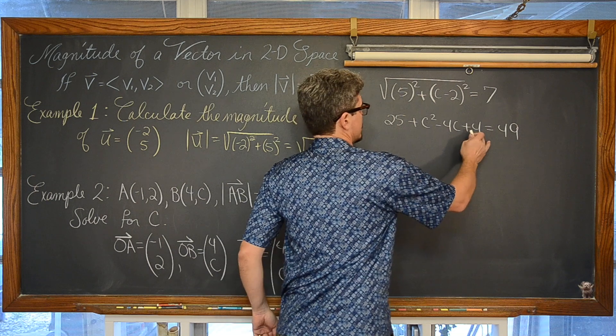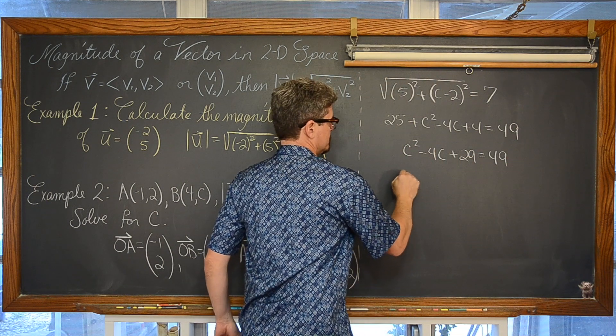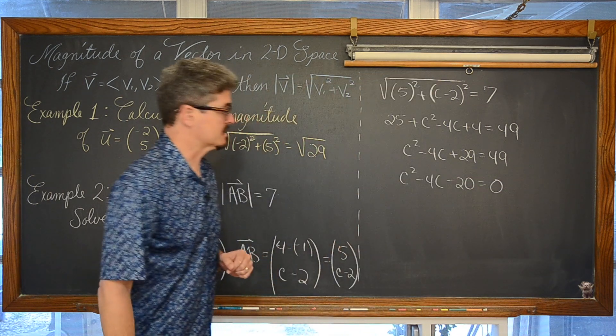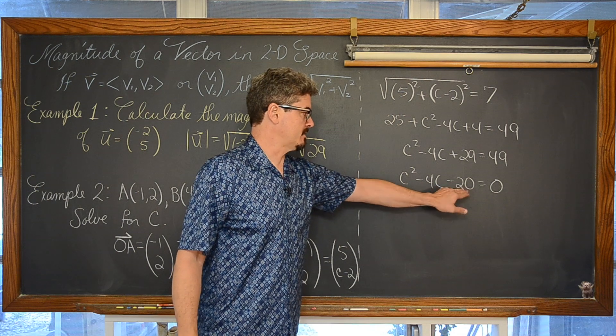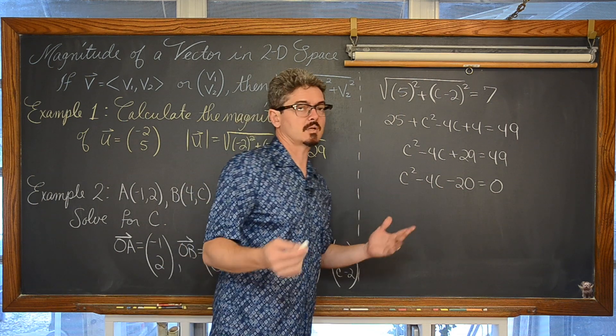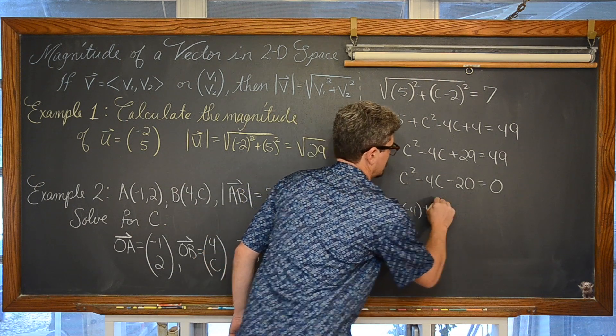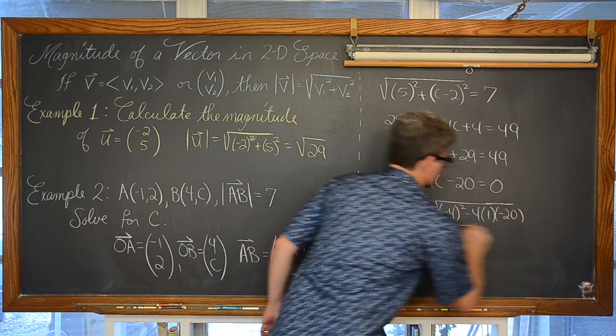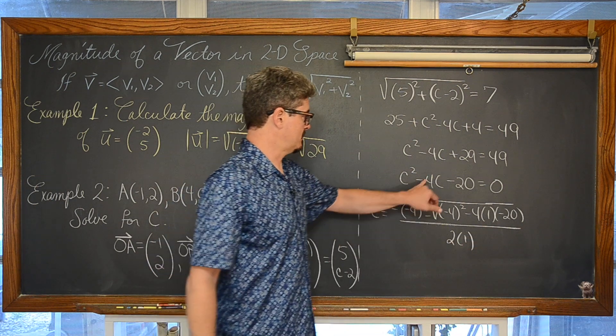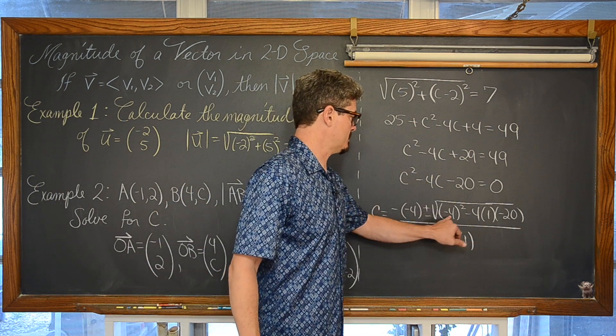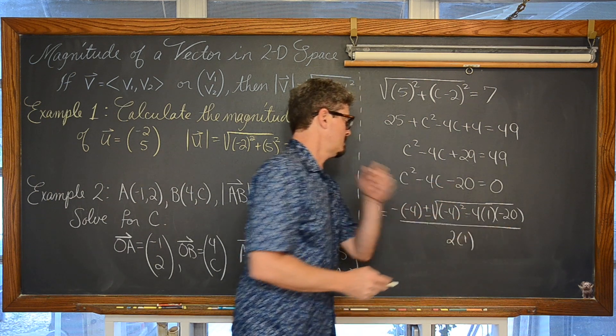Bring the 49 over with subtraction. This quadratic is not factorable. There are no factors of negative 20 that add to be negative 4. So we are going to go ahead and set up that quadratic formula. I am thinking of the formula in my head. Write opposite of B plus or minus B squared minus 4AC all over 2A.